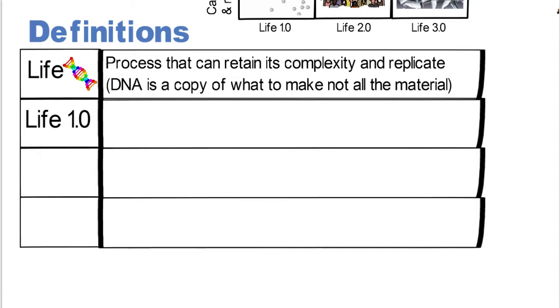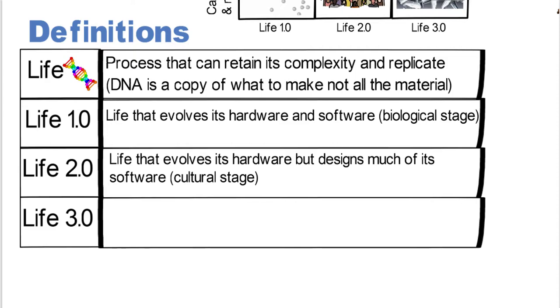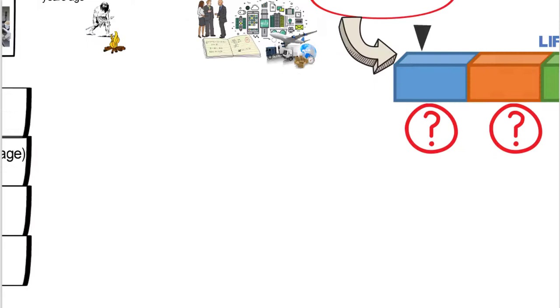So Life 1.0 is life that evolves its hardware and software. It's the biological state. Life 2.0 is basically life that evolves its hardware, but still designs much of its software. It's the culture. Life 3.0 is life that actually designs its hardware and software. That's the technological stage, he calls it.